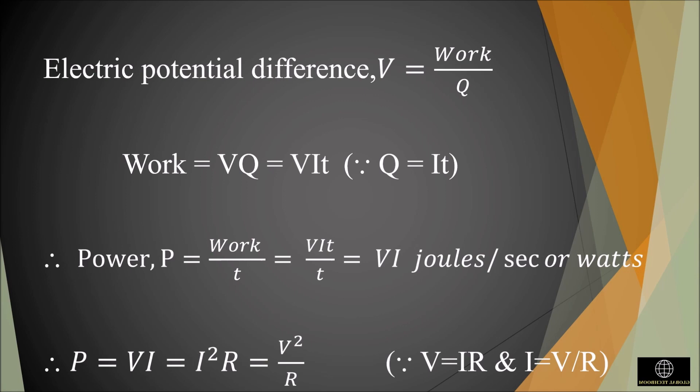Similarly, if we substitute I is equal to V by R, we get the power equation as P is equal to V squared by R. So we get three forms of the power equation.